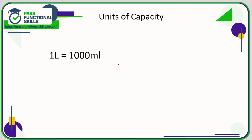Let's take a look at units of capacity. For capacity, the only conversion you need to know is that one litre is 1000 millilitres. So to go from litres into millilitres, you are multiplying by 1000. So therefore, if you're going from millilitres to litres, you need to divide by 1000.